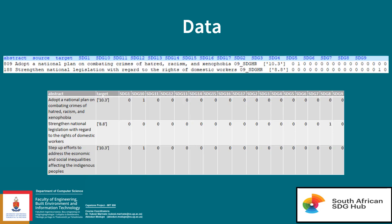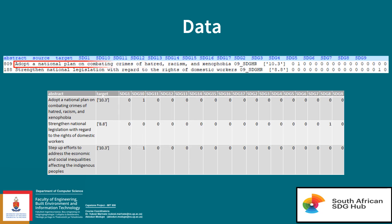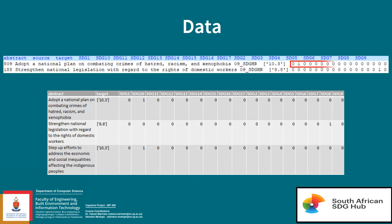The data was received in tab-separated text format with headings: the abstract of the research article, the constituent target classification, and the classification into the SDGs. The below is an indication of the data in table format.